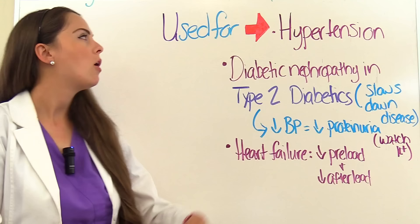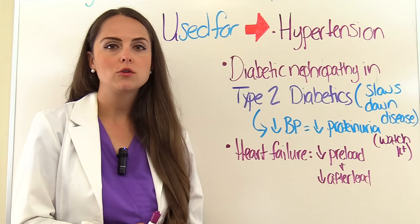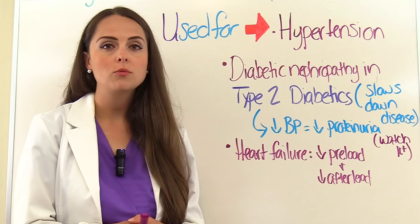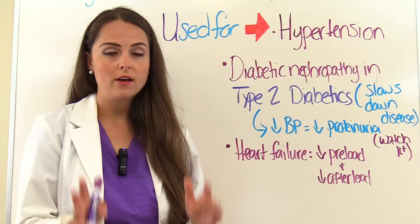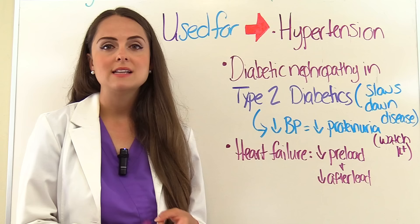Now let's talk about what ARBs are used for. ARBs help lower blood pressure, so they can be prescribed for patients who struggle with hypertension, along with lifestyle changes. These blood pressure medicines are not a cure — they help bring blood pressure down, but the patient also needs to quit smoking if applicable, exercise, and follow a healthy diet.